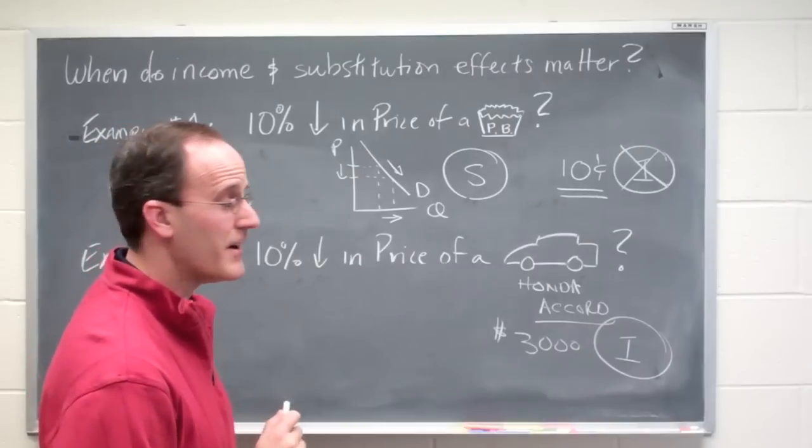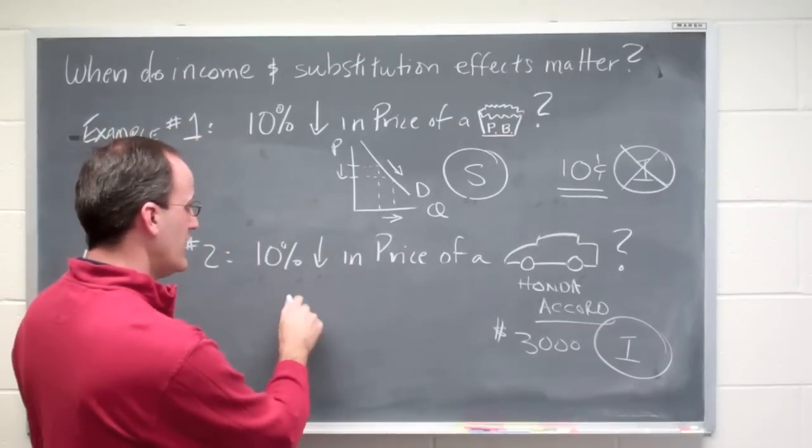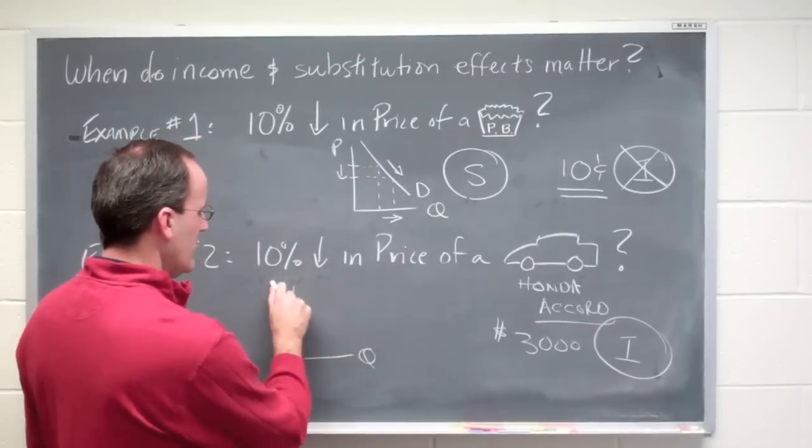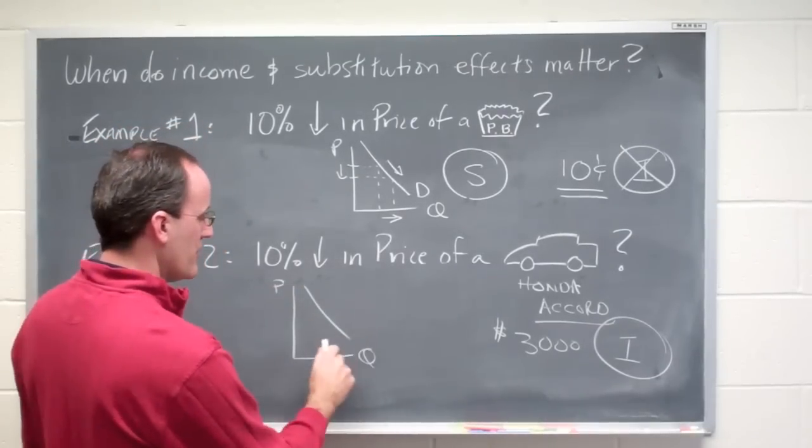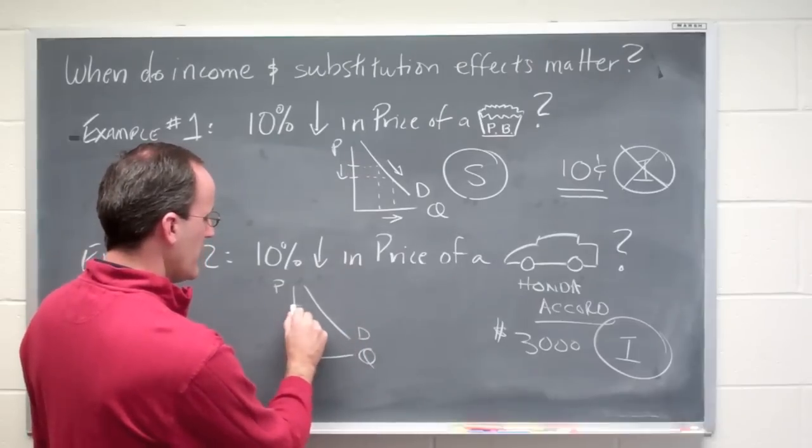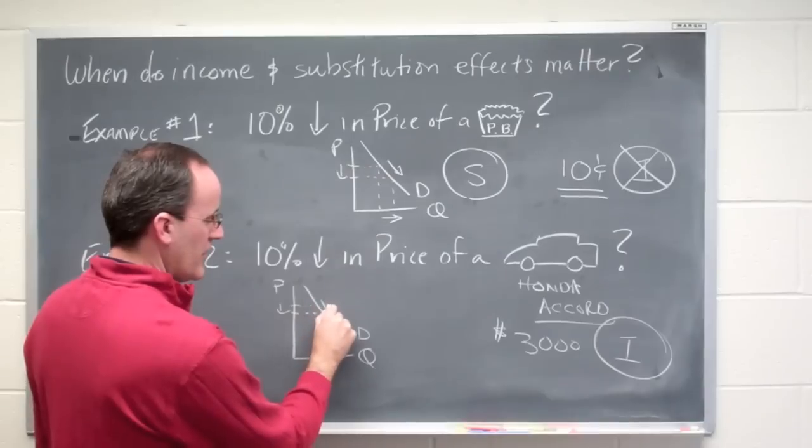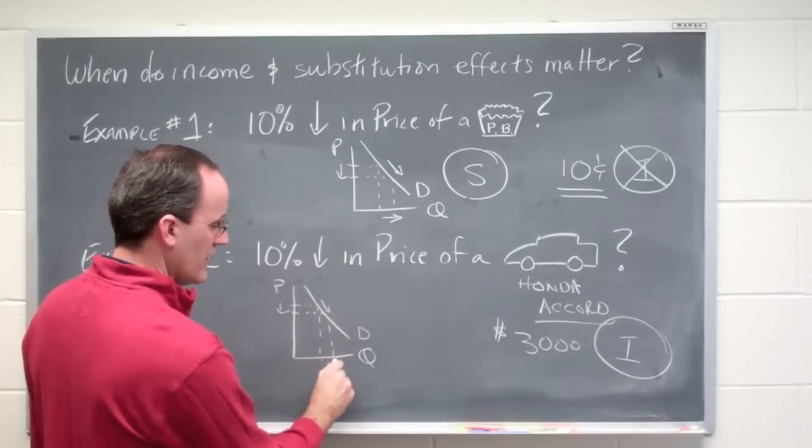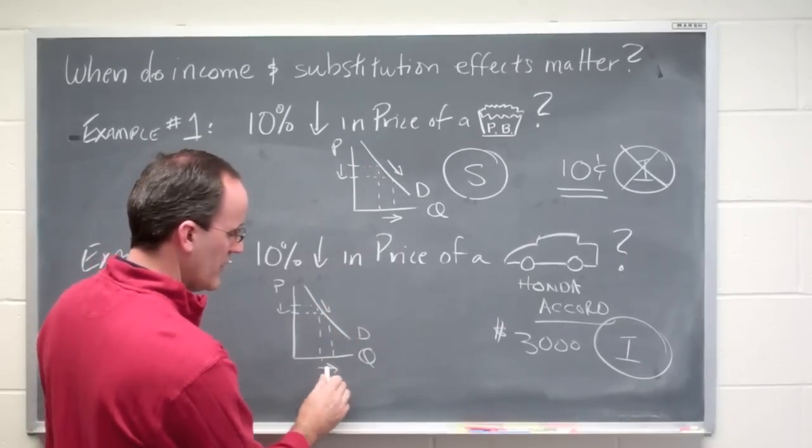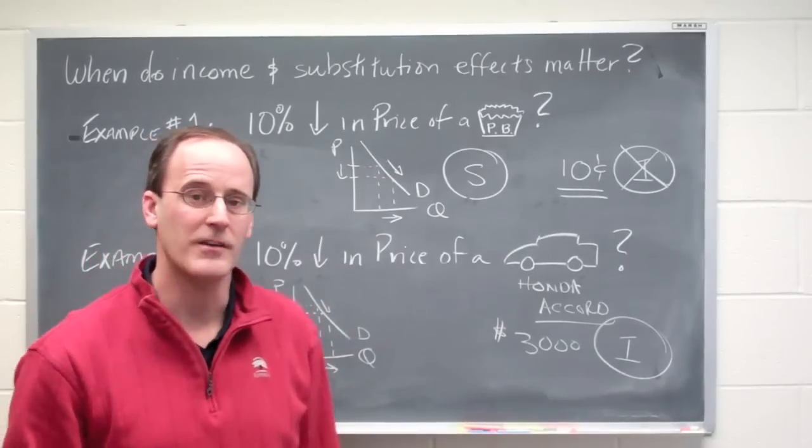What about a substitution effect? Well, okay, the price of a Honda Accord goes down. So here's our demand curve for Honda Accords. So the price falls from $30,000 to $27,000. That's going to cause a movement along the demand curve, which is going to cause people to buy more in the way of Honda Accords and less in the way of other competing vehicles.